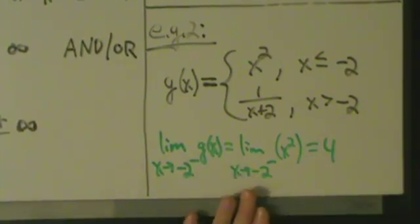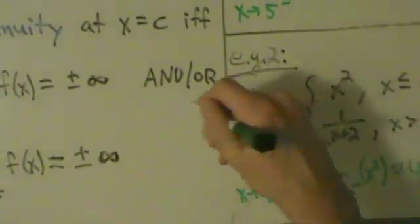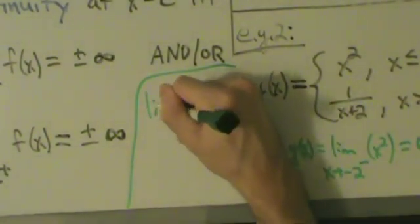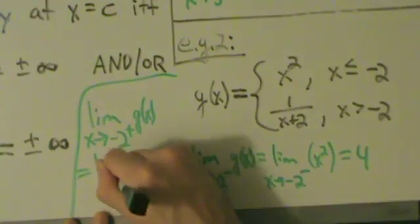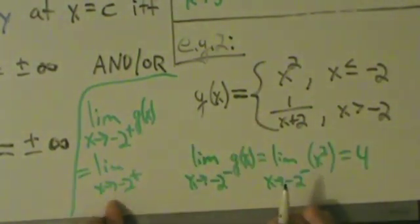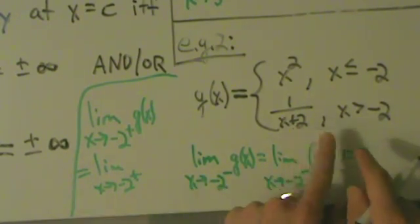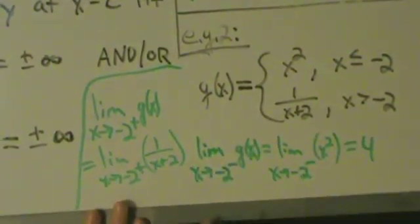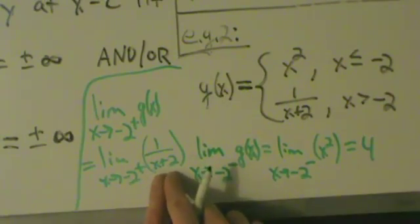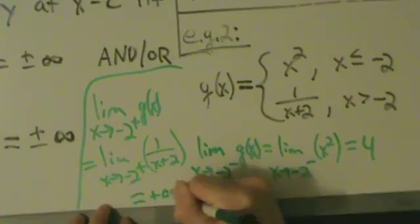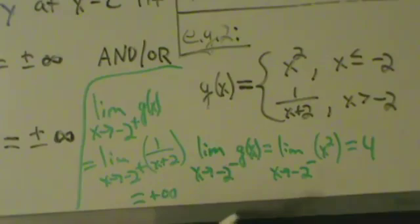We don't know if we have an infinite discontinuity yet because the left-hand limit is 4. Now for the right-hand limit: the limit as x approaches negative 2 from the right of g of x. Since x is always greater than negative 2, we use the second piece, 1 over x plus 2. As x approaches negative 2 from the right, x plus 2 is always greater than 0, so x plus 2 is approaching 0 from the right — meaning this expression shoots off to positive infinity. Because the right-hand limit is positive infinity, we have an infinite discontinuity.